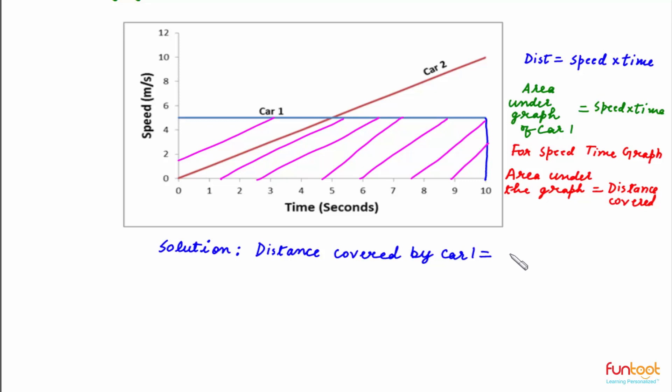As discussed in the approach, distance covered by car 1 is the area of this rectangle. That will be 10, that is the length, multiplied with 5, that is the breadth. This is equal to 50 meters.